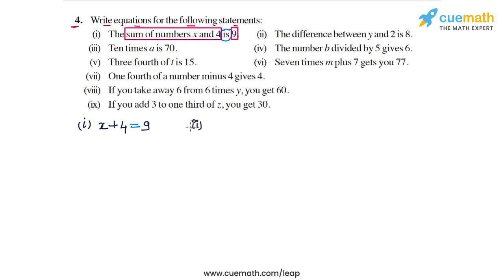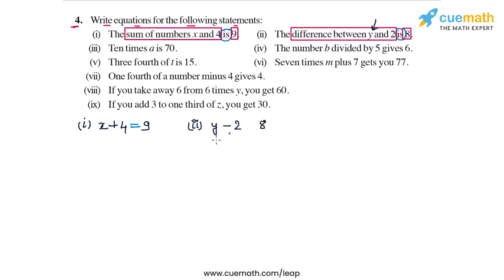In part 2, the statement says the difference between y and 2 is 8. 'Is' becomes equal to in the equation. The difference between y and 2 is your LHS and 8 is your RHS. The difference between y and 2 can be written as y minus 2. Technically it could also be 2 minus y, but since y is written first, we go with y minus 2. So y minus 2 is equal to 8.